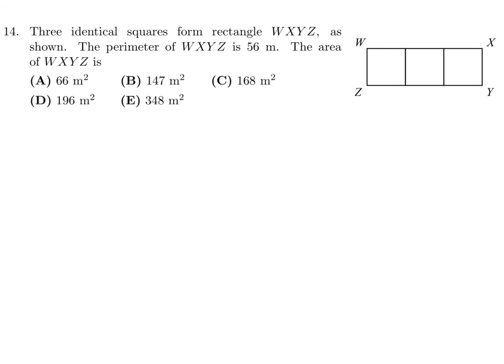Three identical squares form rectangle WXYZ. The perimeter of WXYZ is 56. The area is what? Because they're squares, all sides are equal — I'll call each side x. The perimeter in terms of x is 8x, and they told me that's 56. So 56 equals 8x, giving x equals 7.